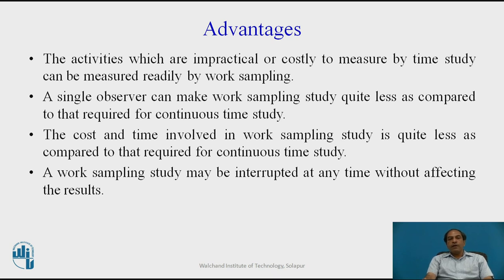To understand the concept with a simple example: suppose there are only two machines and one supervisor who wants to study machine utilization. The supervisor finalizes a sampling study, takes random observations of the machines, and then calculates the total percentage of working and non-working observations relative to the total number of observations — and that gives the proper utilization figure.